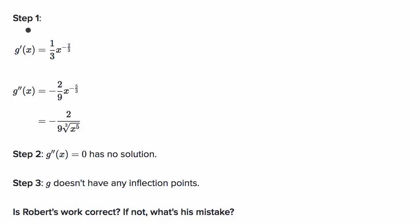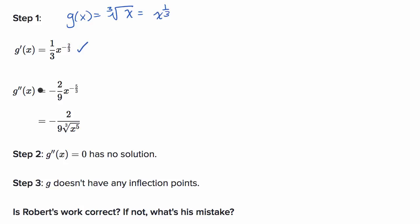Our original g of x is equal to the cube root of x, which is the same thing as x to the 1/3. So in step one, it looks like Robert's trying to find the first and second derivative. The first derivative — we just do the power rule, so it'll be 1/3 x to the decrement of the exponent. This is looking good.